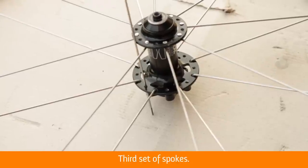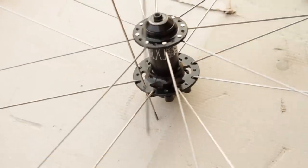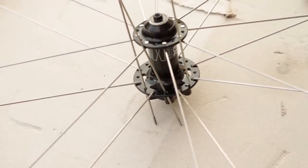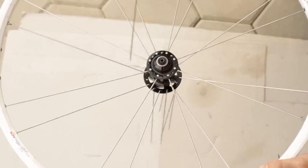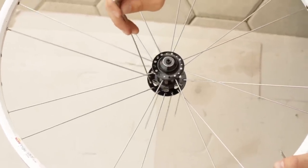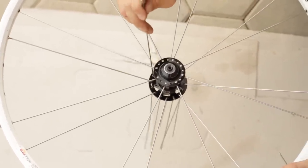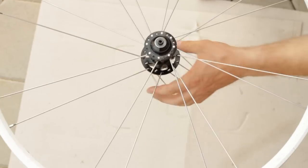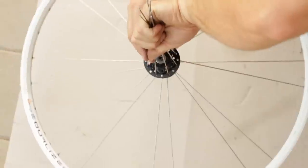Third set of spokes. Drop spokes through the remaining holes on the right side of the hub from the inside of the hub out. Remember, if it's a rear wheel or front disc brake wheel, this should be the shorter spokes. While grabbing the spokes you just dropped through the hub, flip the wheel over.